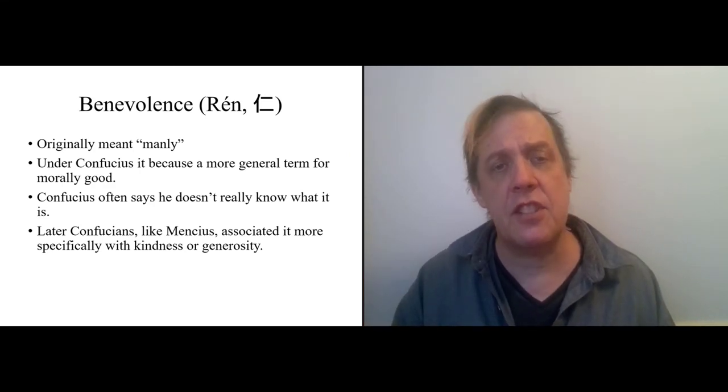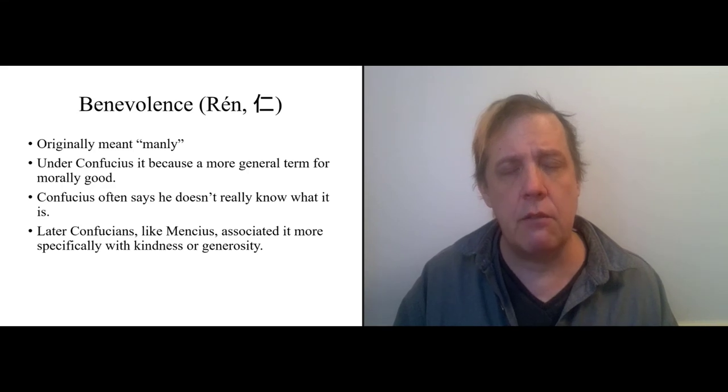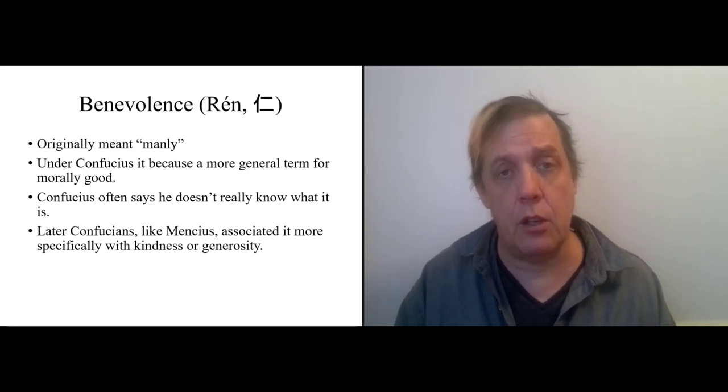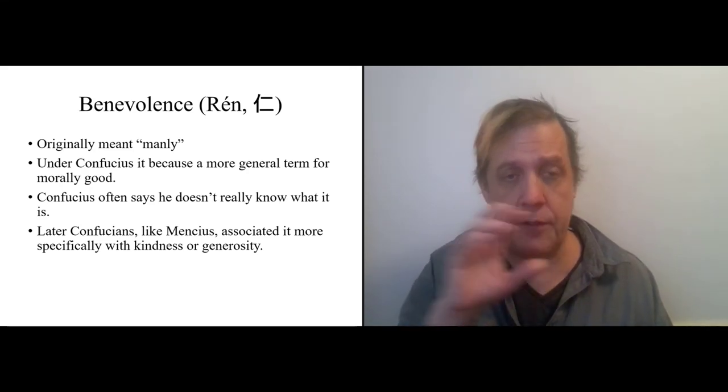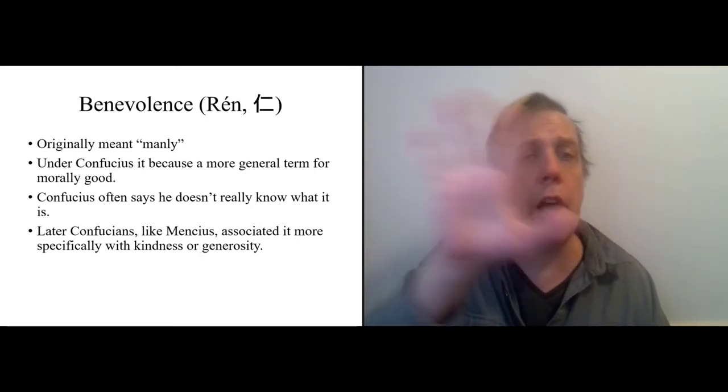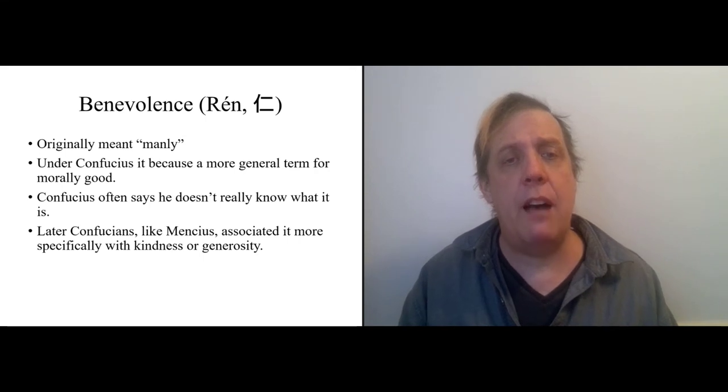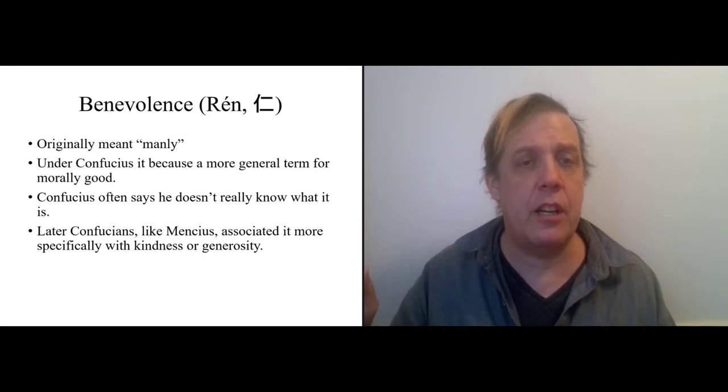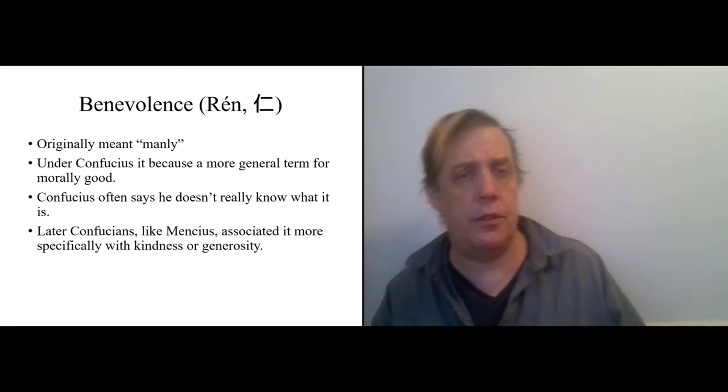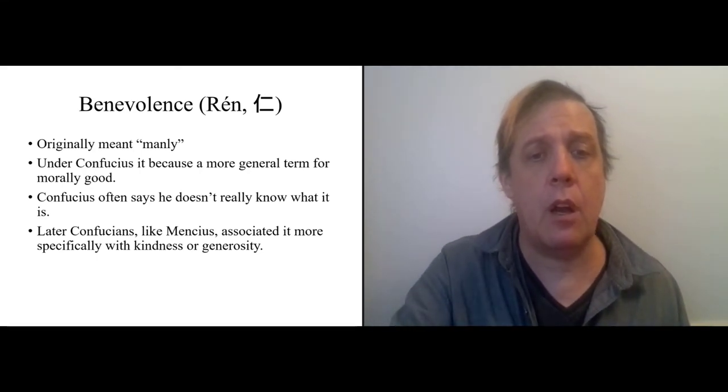We'll see this more when we get to Confucius as a teacher and a student. Later, Confucius, like Mencius, associate Ren specifically with kindness or generosity, humaneness. So you can see the evolution of the term over time. Your translator Slingerland generally uses the term goodness here because for Confucius, it's a general broad goodness. Benevolence, which is what I've got as the header here, refers more to Mencius's later usage.